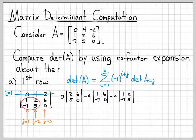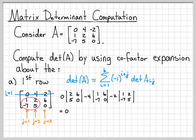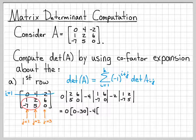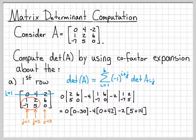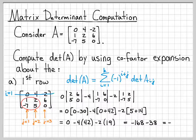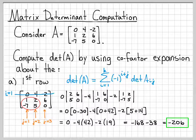Now we compute the 2 by 2 determinants. The first term is 0 since 0 times its scalar is 0. Then minus 4 times (1 times 0 minus 6 times negative 7), which is minus 4 times 42. Then minus 2 times (1 times 5 minus 2 times negative 7), which is minus 2 times 19. Simplifying: 0 minus 168 minus 38 equals negative 206. The determinant of this matrix is negative 206, computed via cofactor expansion about the first row.